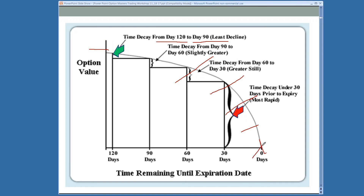You can think of an option kind of like a coupon you get at a store — it says 'redeem by such-and-such date,' and if you don't use it in time, you can't take advantage of that discount. It's the same thing with an option: time decay is eating away at it, and it's going to reach zero. It's a decaying asset if you're long options.